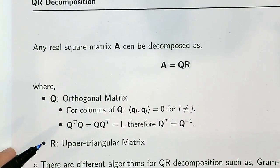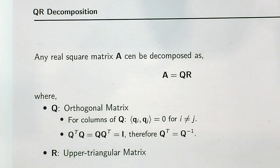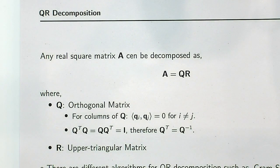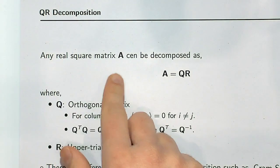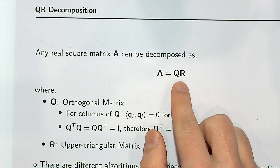Before going further, I want to introduce QR decomposition, something you will hear a lot in linear algebra. For any real square matrix A, we can always decompose it into the product of two matrices, Q and R. Q is an orthogonal matrix, meaning any two distinct columns of Q are orthogonal to each other — their inner product is zero. An important property is that Q-transpose times Q equals Q times Q-transpose equals the identity matrix, which means Q-transpose equals Q-inverse.